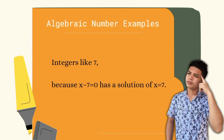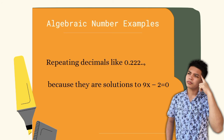Next example, we have the integer 7. Why is this considered an algebraic number? It is because x - 7 = 0 has a solution of x = 7. And 7 is an integer, which is part of the rational numbers, and it was stated earlier that a rational number is an algebraic number. Next example, we have the repeating decimal 0.222... Why is this considered an algebraic number? It is because it is a solution to 9x - 2 = 0.